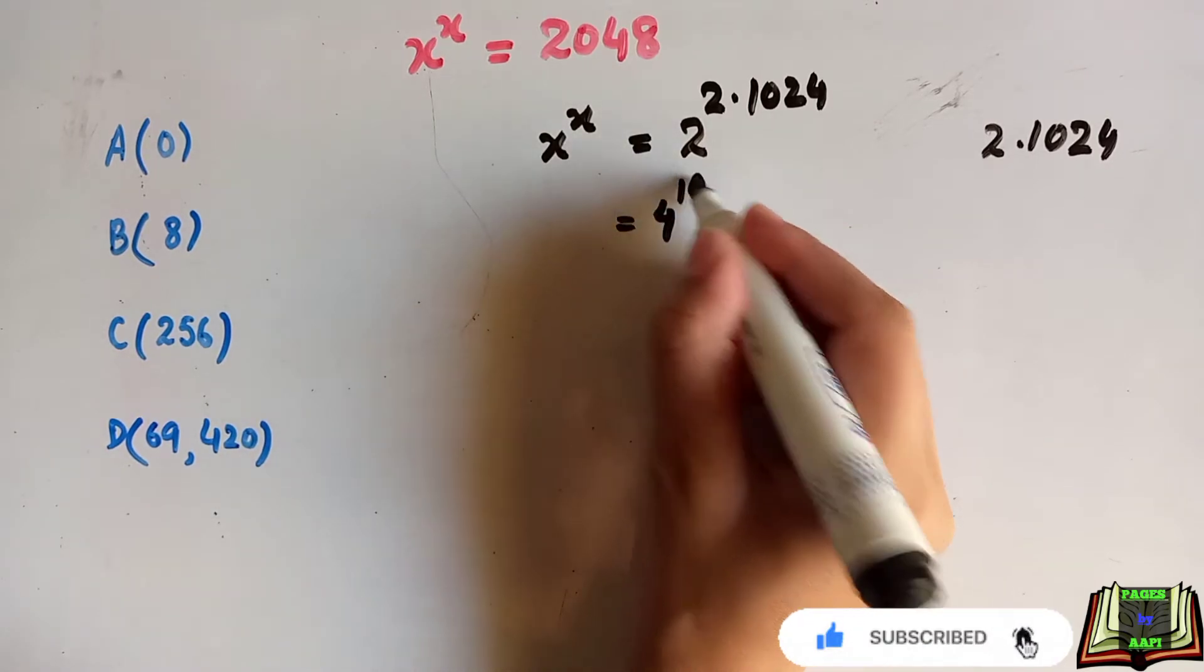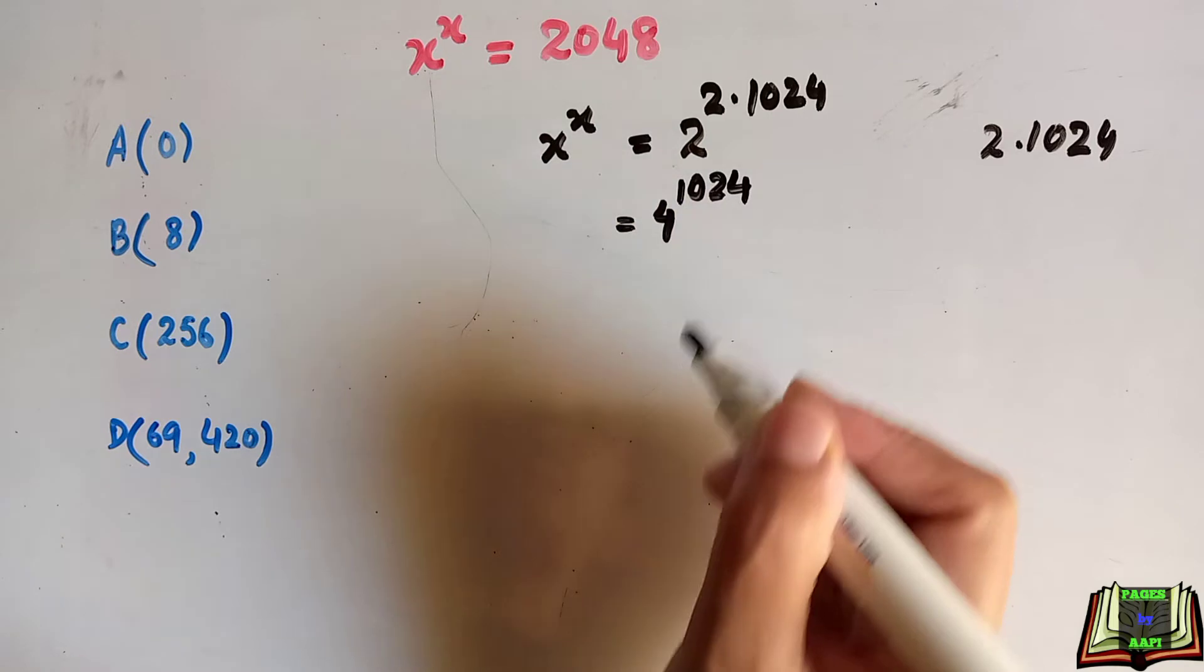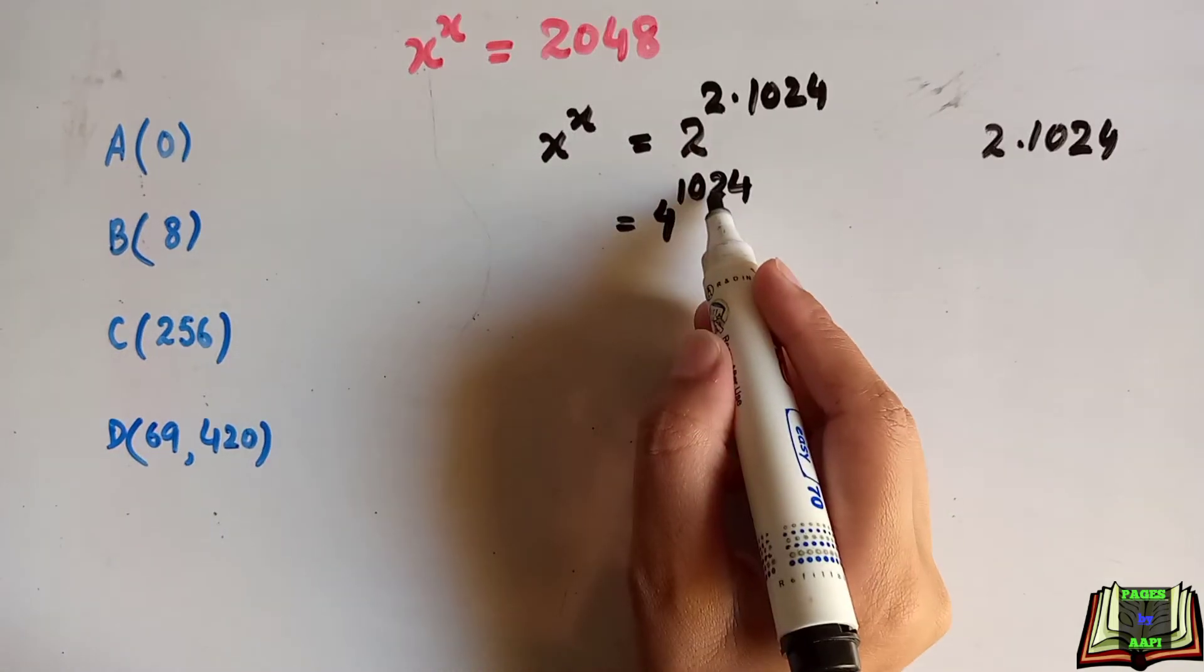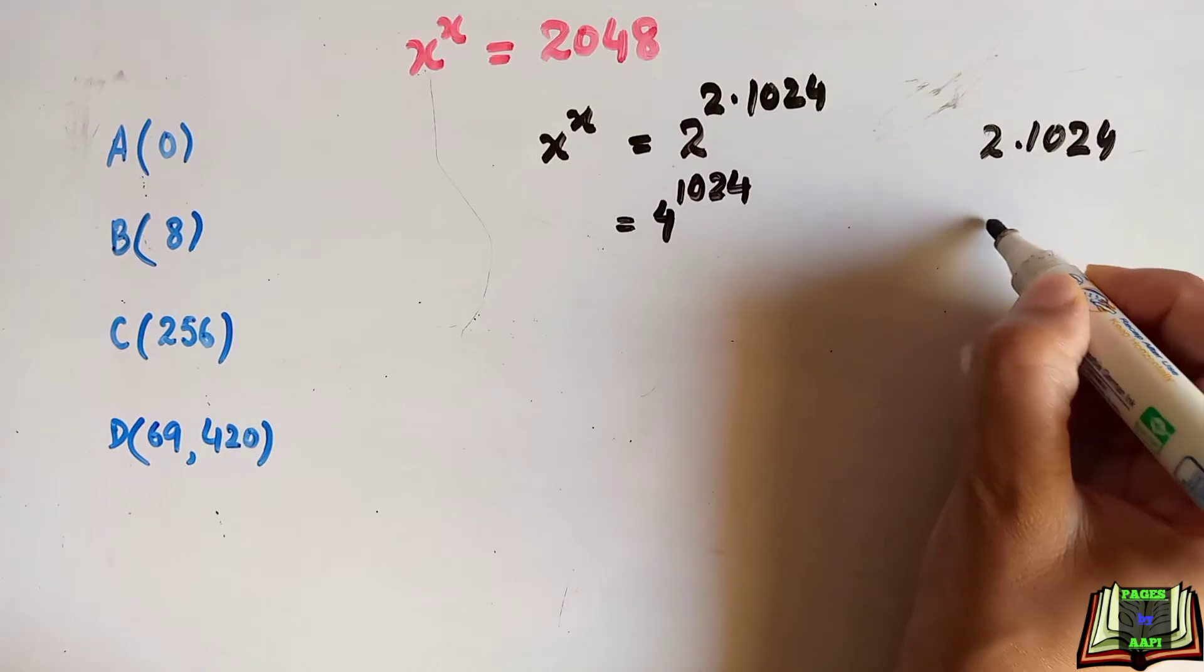4 to the power 1024. As it is with a new base 4, now 1024 again can be simplified as